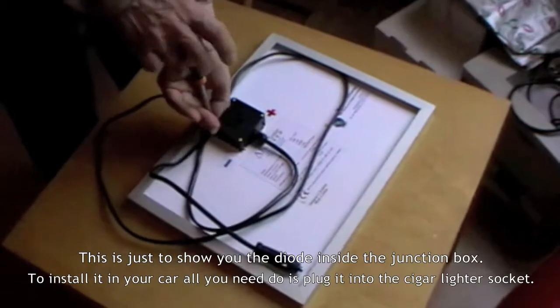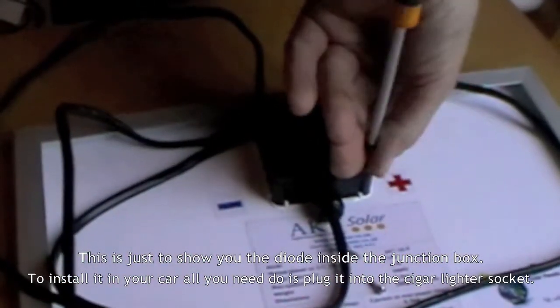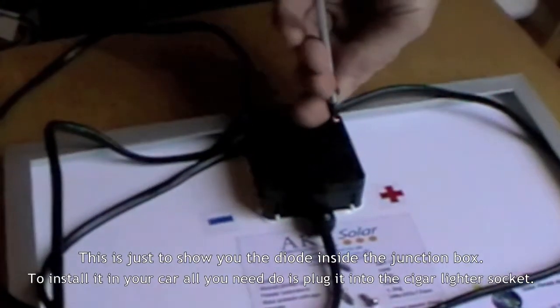So opening up the junction box, waterproof junction box, and what's inside is a diode. And that diode is to stop the electricity from flowing back through the panel at night.